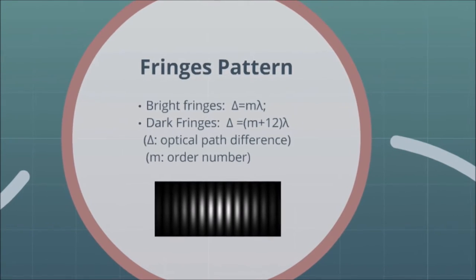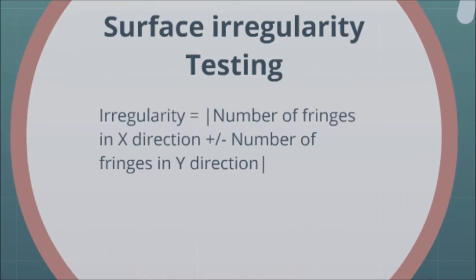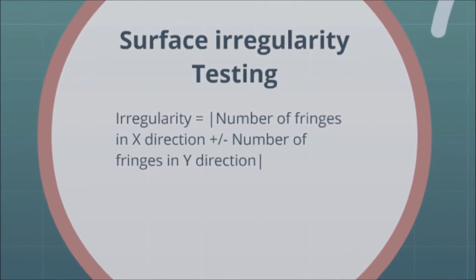Based on the fringe pattern obtained by the interferometer, there are plenty of physical quantities that can be measured. Surface irregularity would be one of the most common ones we could easily test.